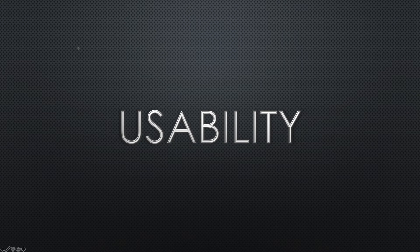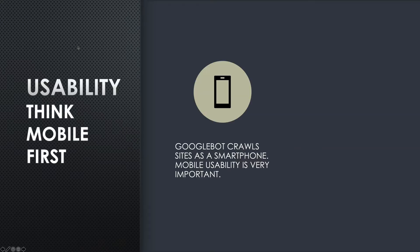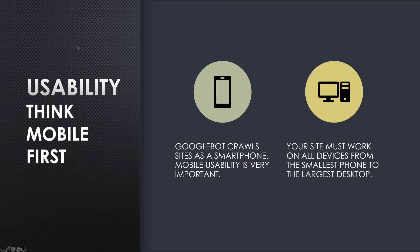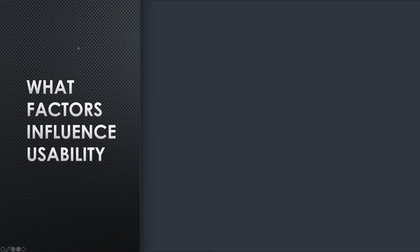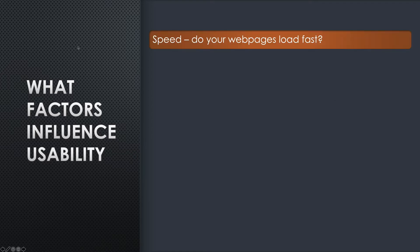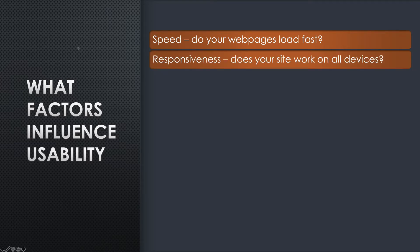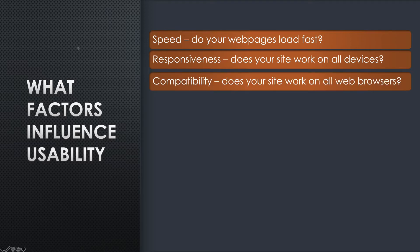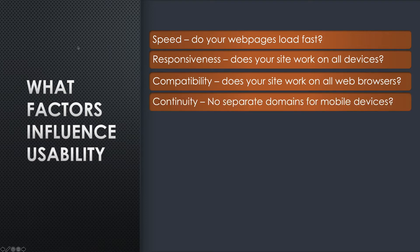Now let's deal with usability in detail. Usability is all about mobiles — Googlebot crawls sites as a smartphone, not as a desktop. Mobile usability is very important. Your site must work on all devices from the smallest phone to the largest desktop and probably an 8K television as well. What factors influence usability? Speed more than anything else — do your web pages load fast? Are they responsive to different devices? Do they work on all devices? Compatibility: does your site work on all web browsers?